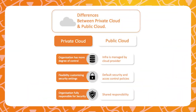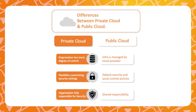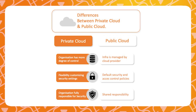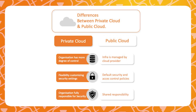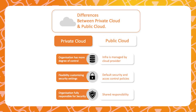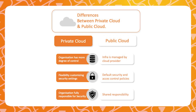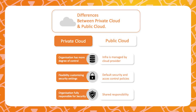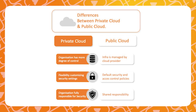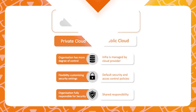What is degree of control? In a private cloud, organizations generally have more control over the physical and virtual infrastructure. They can implement specific security measures and make adjustments to the authorization rules according to their needs. In a public cloud environment, the infrastructure is managed by the cloud provider. While cloud providers offer advanced security measures, organizations have less direct control over the physical infrastructure.